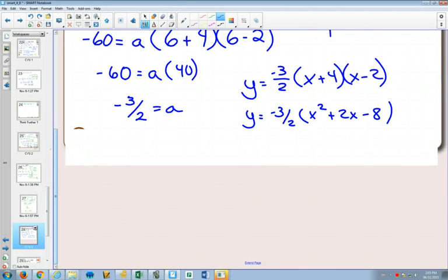And now if I distribute that -3/2, I'll get y = -3/2 x squared minus 3x plus 12.